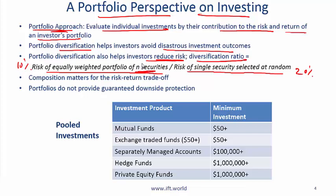If another portfolio has a diversification ratio of 0.8, is that better or worse? The answer is worse. A lower ratio means you have more diversification benefit.